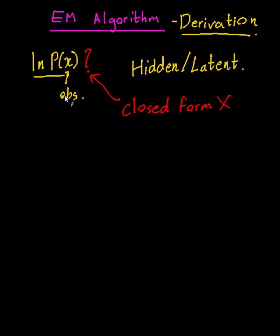There are two steps for the Expectation Maximization algorithm. As the name suggests, you have your E-step and then the M-step. But before we get too far ahead, let's jump to the basics.